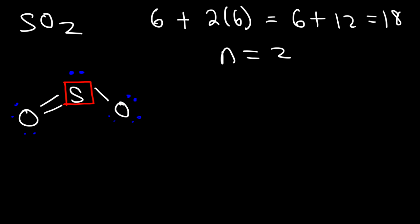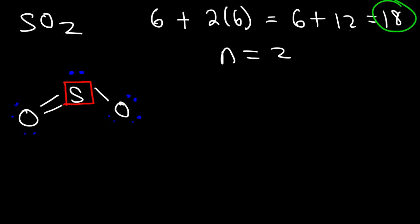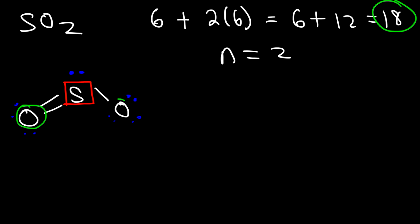In this structure, every atom has eight electrons around it. Oxygen has 2, 4, 6, 8 — oxygen is satisfied. Sulfur has 2, 4, 6, 8 — sulfur is happy. And the other oxygen also has 8. When you draw a Lewis structure, make sure all electrons add up to the total number of valence electrons, and that every element has eight electrons around it. Hydrogen can only have two, so this rule doesn't apply to hydrogen. The center atom may sometimes have an expanded octet or an incomplete octet, but outer atoms always have eight electrons.